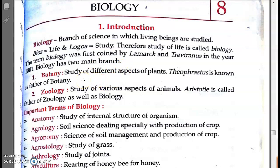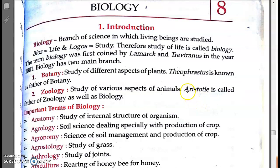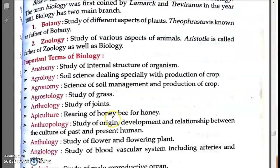The father of Botany is Theophrastus. The father of Zoology is Aristotle. Aristotle is also called the father of Biology. So you have to remember: father of Botany is Theophrastus, and father of Zoology as well as father of Biology is Aristotle.